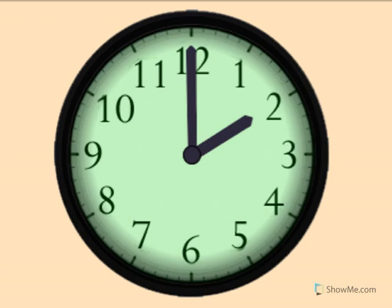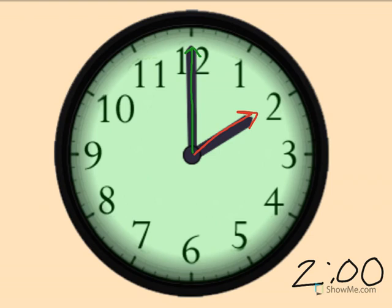2 o'clock. Show me 2 o'clock on your clock. The little hand tells the hour. The little hand is pointing to the 2. The big hand tells the minute. Big hand pointing straight up is o'clock.